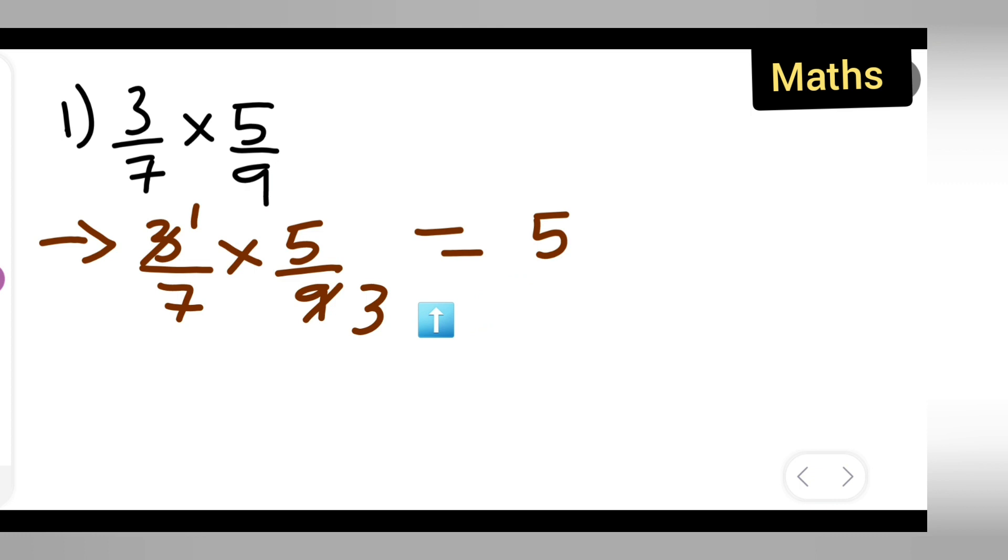So 5 ones are 5, then 3 is remaining. So 3 sevens are 21. So you can directly write down 5 upon 21 is your answer.